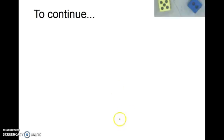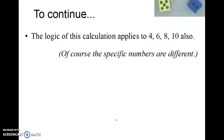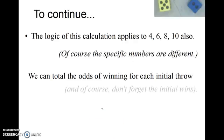So if we move on with the calculation, that is, the same logic is going to apply to four and ten and six and eight. Of course, the details are totally different. You can get the total odds of winning for each initial throw. That is, whether I throw a 4 or 5, a 6, an 8, a 9, a 10. I can get the odds of winning. And of course, I can't forget the odds of winning on my very first throw with a seven or eleven.